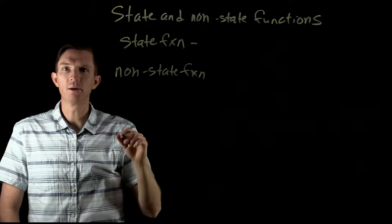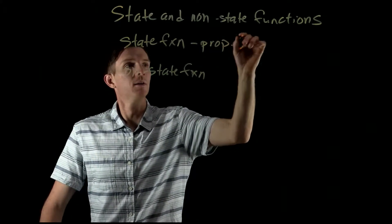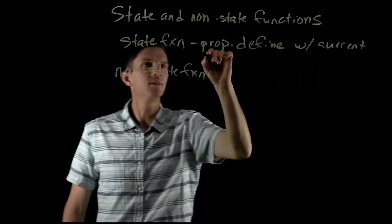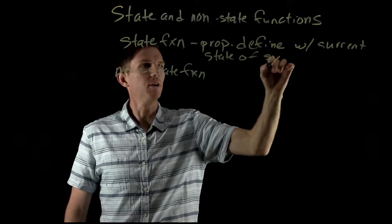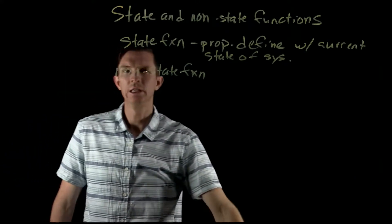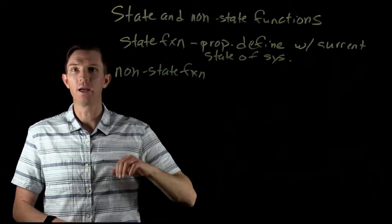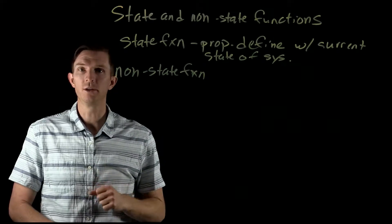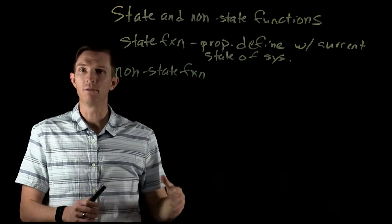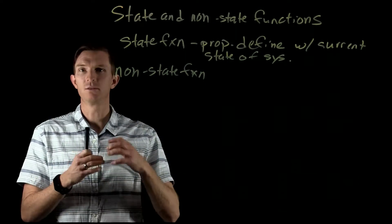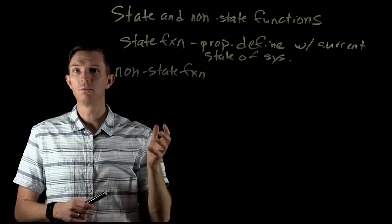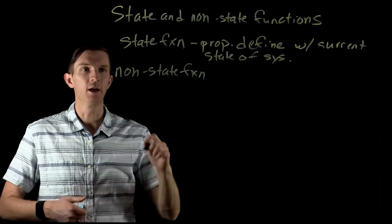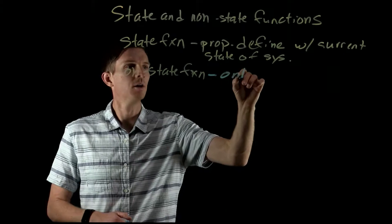A state function is a property that we can define with the current state of a system. We're able to look at it and see what the property is — something like temperature, volume, pressure, or mass. These are state functions: properties of substances, gases, or liquids that we can measure and quantify just by looking at that substance, without needing to observe a change.